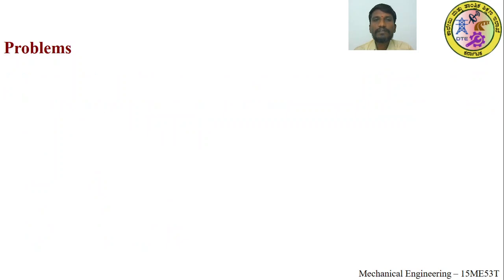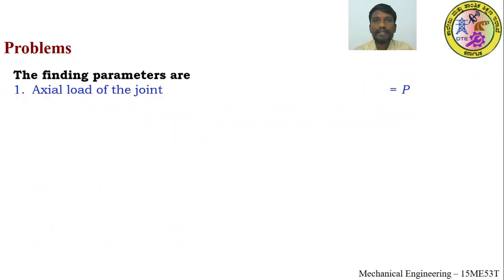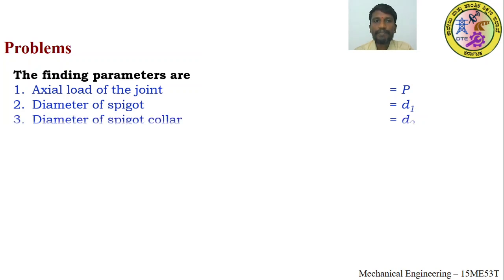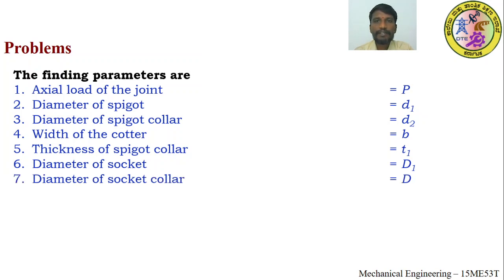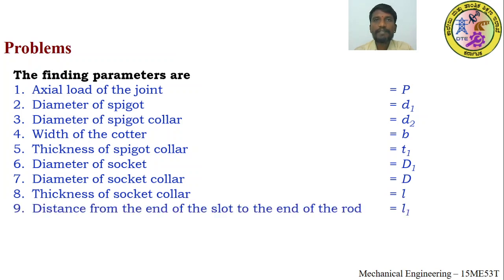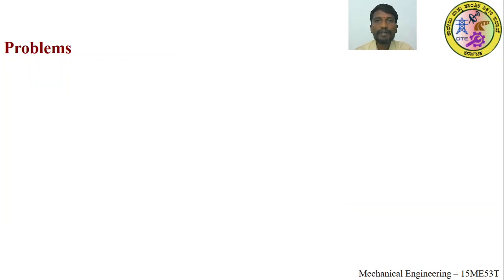The parameters to find are: axial load P; diameter of spigot d1; diameter of spigot collar d2; width of cotter b; thickness of spigot collar t1; diameter of socket D1; diameter of socket collar D; thickness of socket collar l; distance from end of slot to end of rod l1; and thickness of socket end t2.